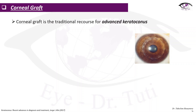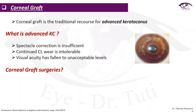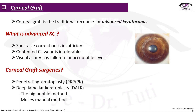Surgery for keratoconus. Corneal graft is a traditional recourse for advanced keratoconus. Advanced keratoconus is defined as: spectacle correction is insufficient, continued contact lens wear is intolerable, and visual acuity has fallen to unacceptable levels. Surgical options include penetrating keratoplasty, deep anterior lamellar keratoplasty with the big bubble method, and DALK with the manual method.